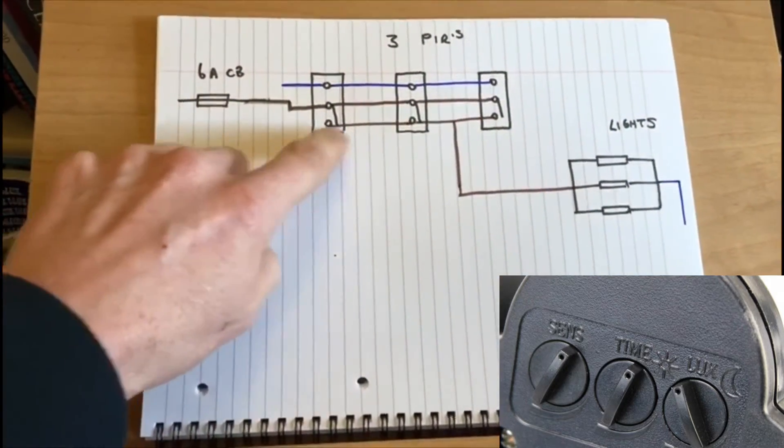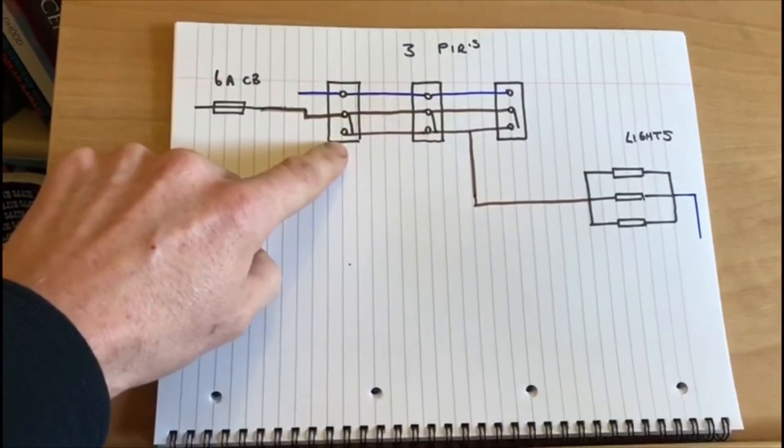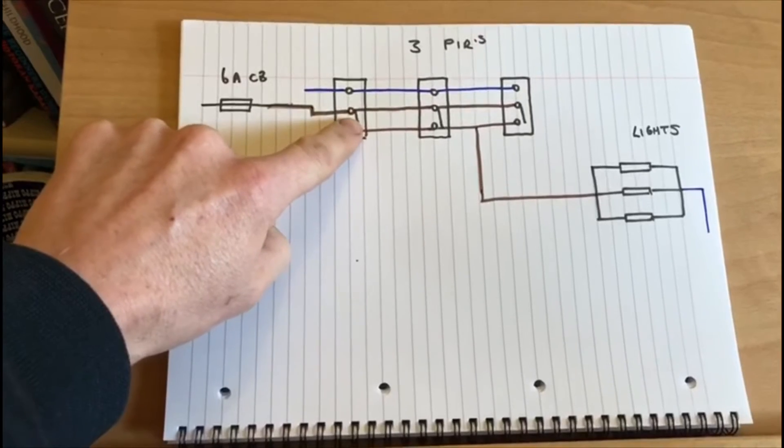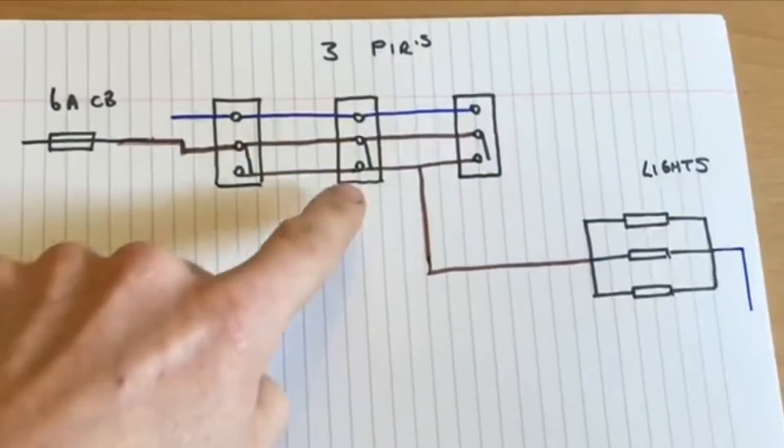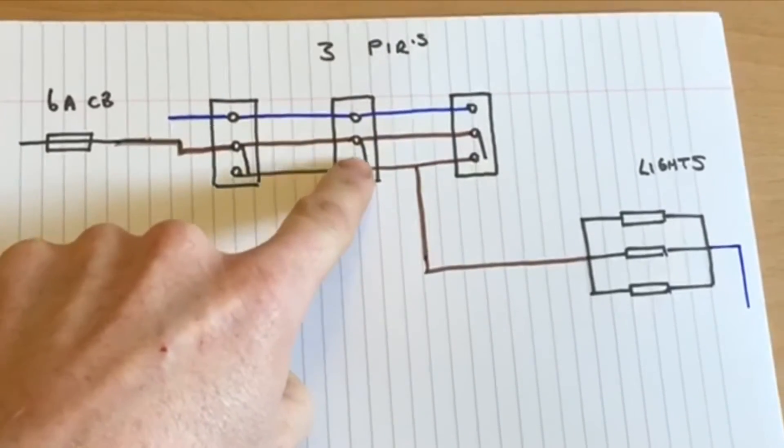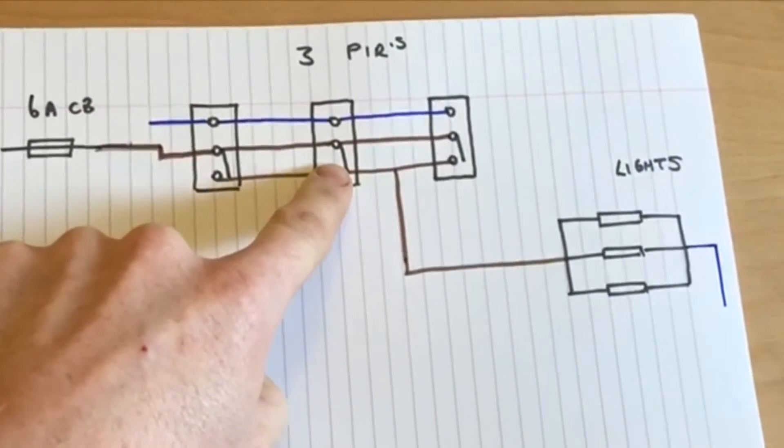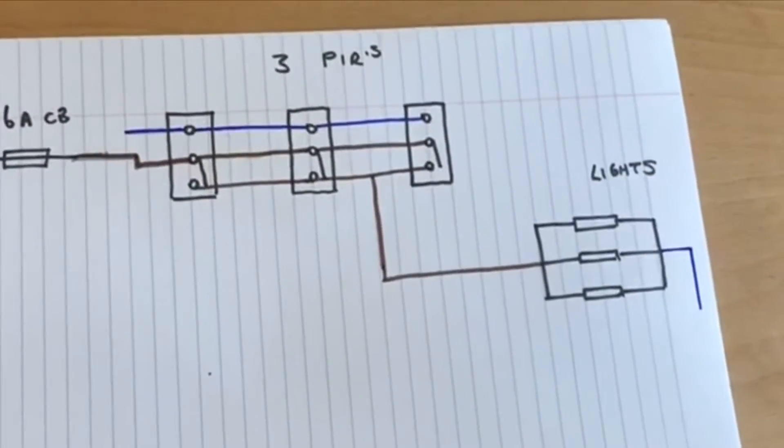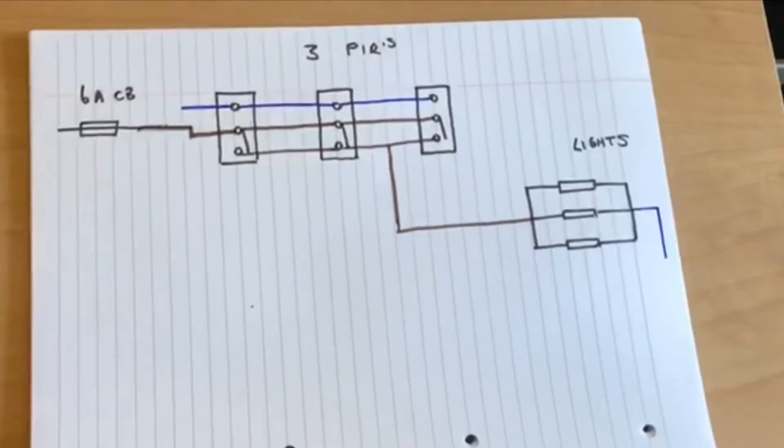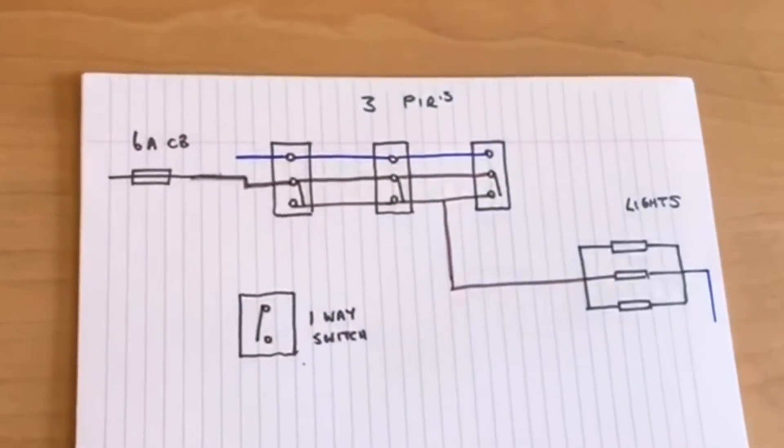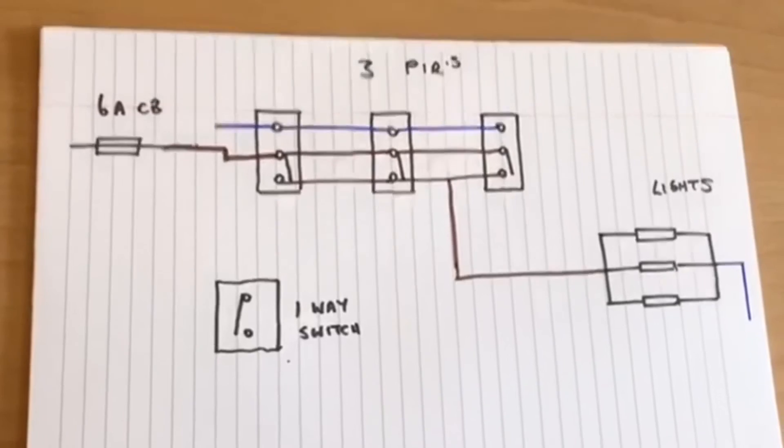All three PIRs are now controlling those lights. It's a good idea to have the times all set to about the same sort of time, although it doesn't really matter. This one could be set at a different time. So if this one was set on say 10 seconds and this one went off, it would only last for 10 seconds. Whereas if this one was to go and that was operated for two minutes, then this one would operate the lights for two minutes until the timer runs out on that one.